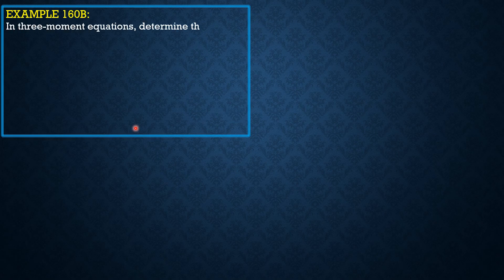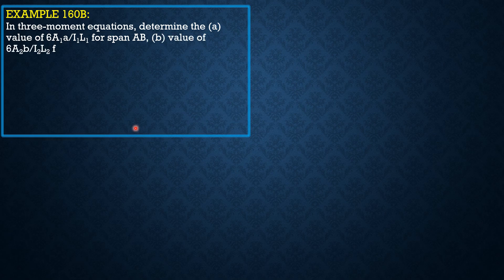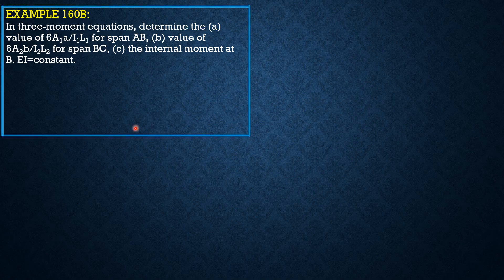In three-moment equations, determine letter A the value of 6 area 1A over I1L1 for span AB, the value of 6 area 2B over I2L2 for span BC. The internal moment at B, EI is constant.